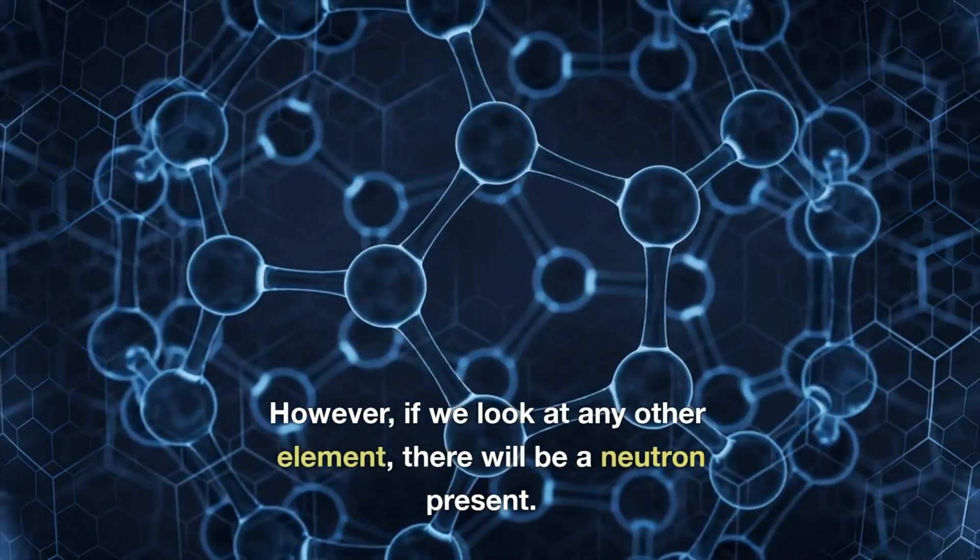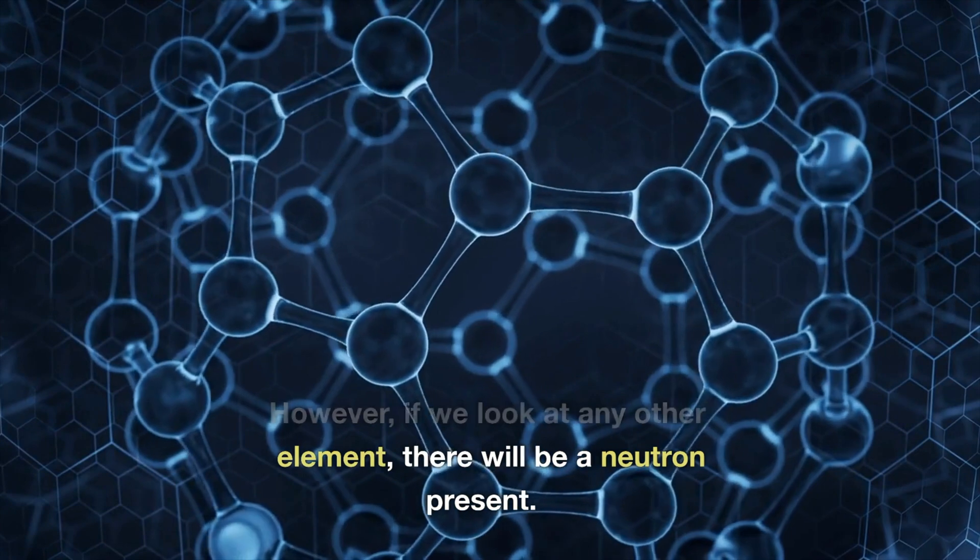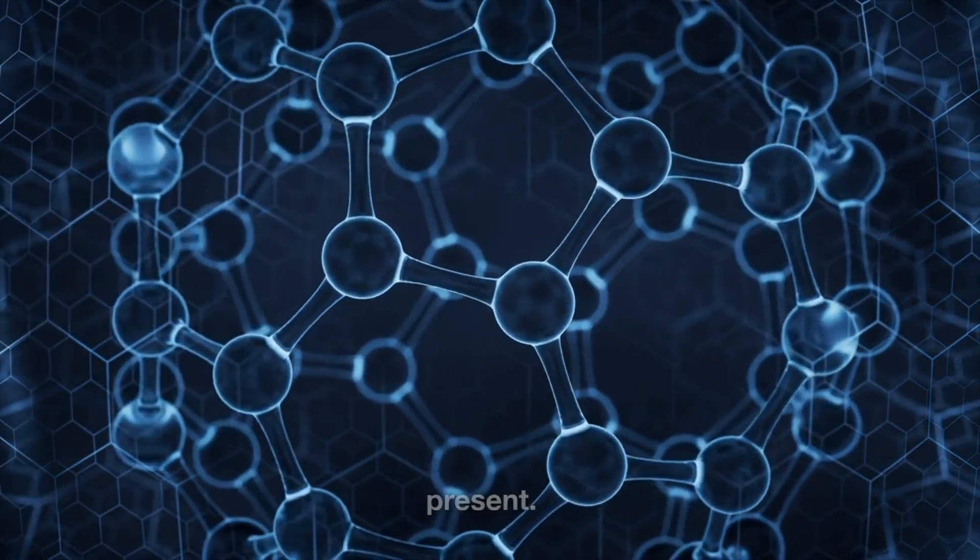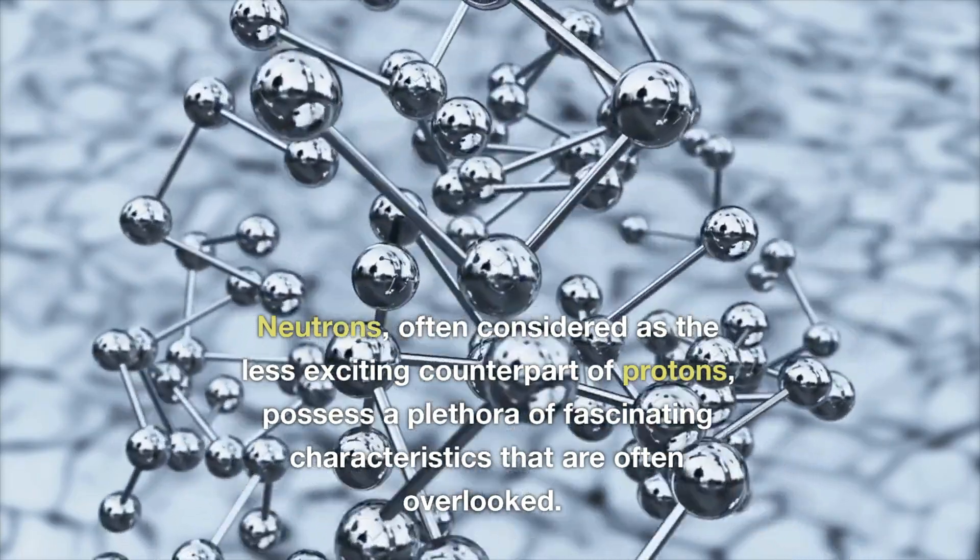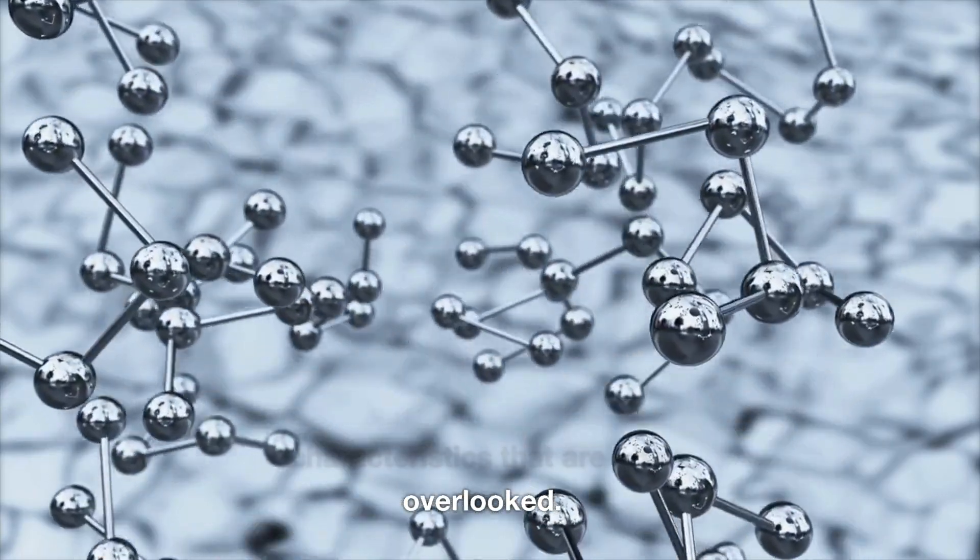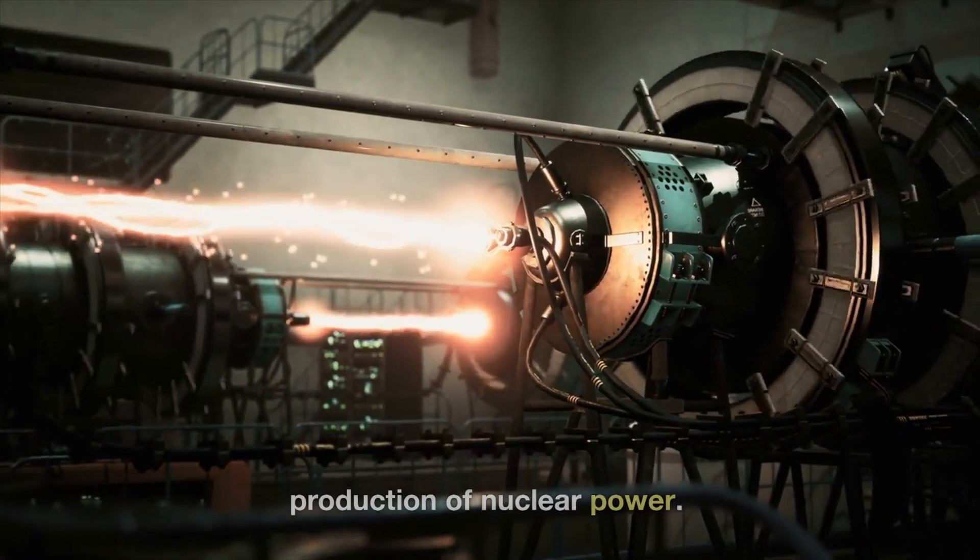This is why in the single-proton hydrogen nucleus, there is no neutron, but in all other atoms, there are neutrons. Hydrogen is made up of a single electron and proton, and the neutron is optional. However, if we look at any other element, there will be a neutron present.